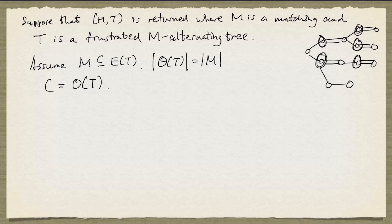So what we do is to observe the following. So let's say this is my tree T, and this is my set C, which is its odd set.